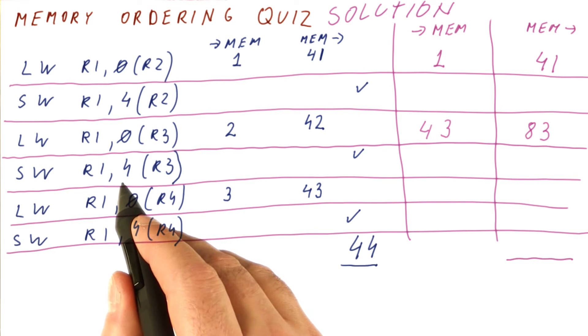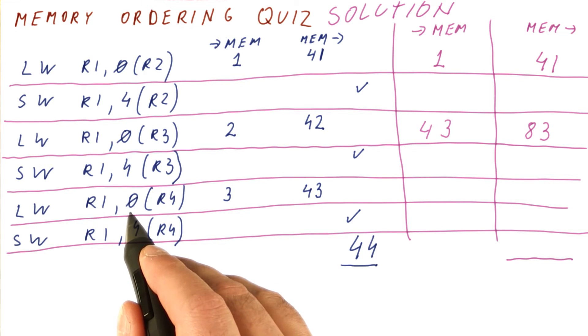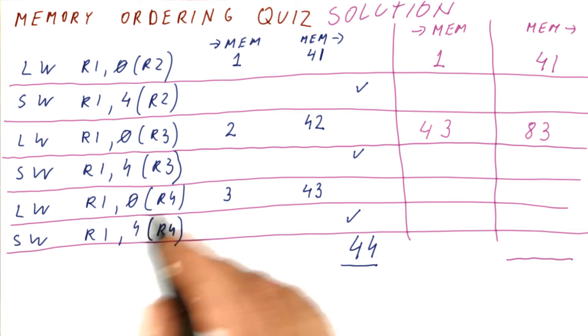At that point, this store can finish at cycle 84. In cycle 85, that means that only then this load can go to memory.